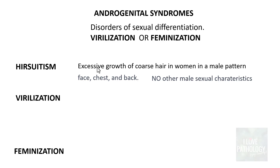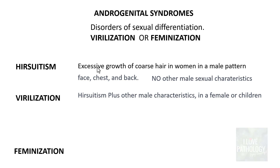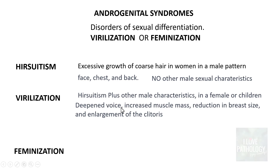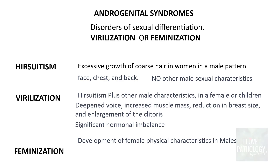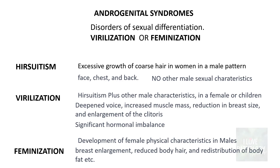Virilization means hirsutism plus other male characteristics found in females or very young children — including deepening of the voice, increased muscle mass, reduction in breast size, and enlargement of the clitoris. This happens when there is a significant hormonal imbalance. Feminization means development of female physical characteristics in males, like breast enlargement, reduced body hair, and redistribution of fat.